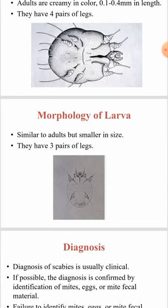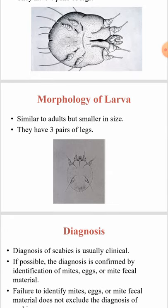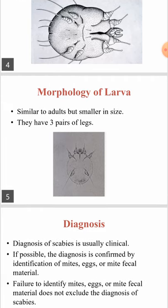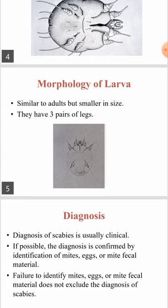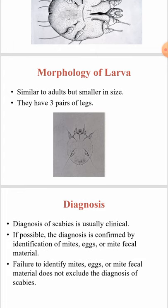Regarding the morphology of the larva, the larva is smaller than the adult in size, and it has three pairs of legs instead of four.